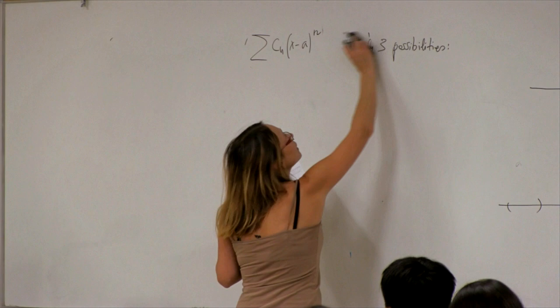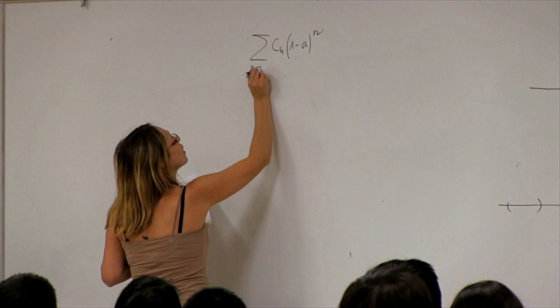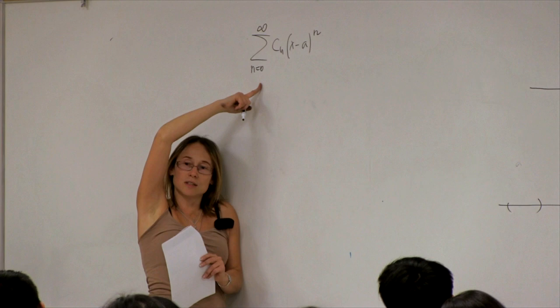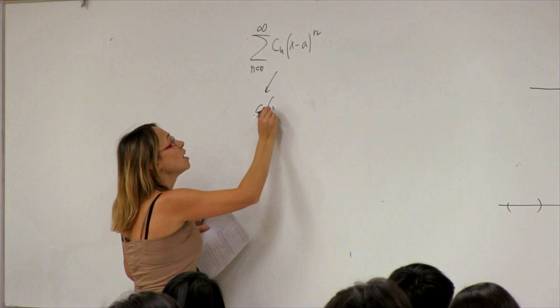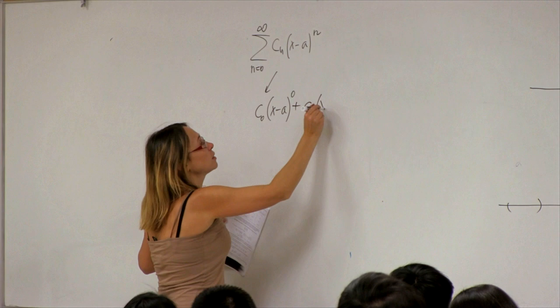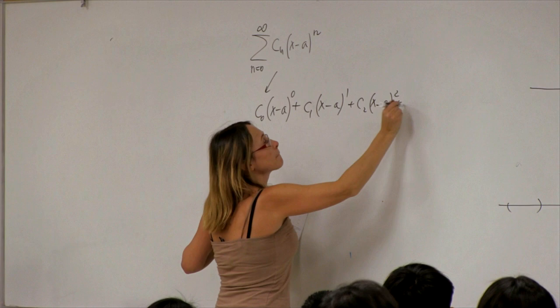One thing I forgot to comment on: when we define the power series, enumeration usually starts at zero. Looking at the first term: c₀(x−a)^0 plus c₁(x−a)¹ and so on. When x is not equal to a, (x−a)^0 is one, so the first term equals c₀.